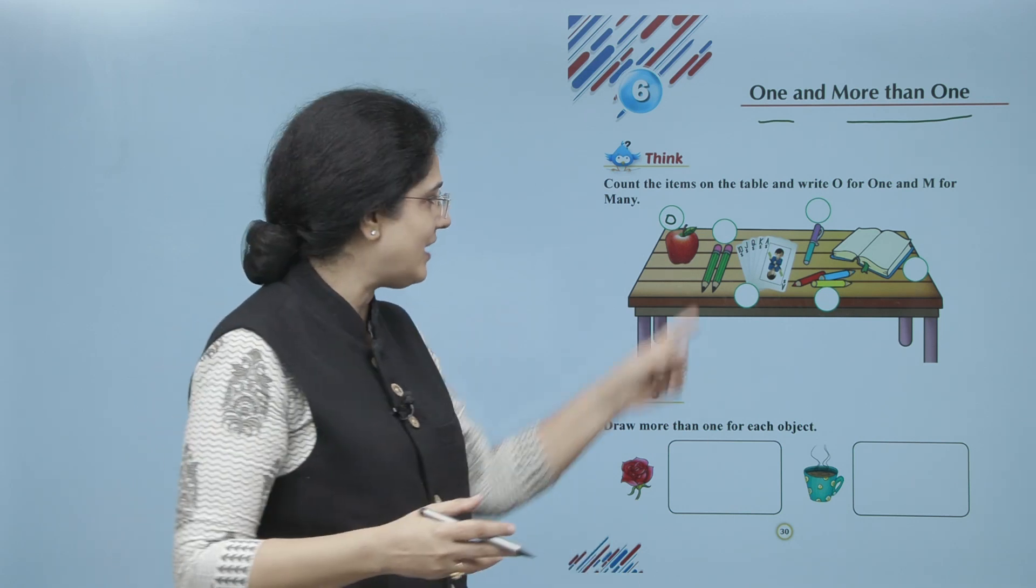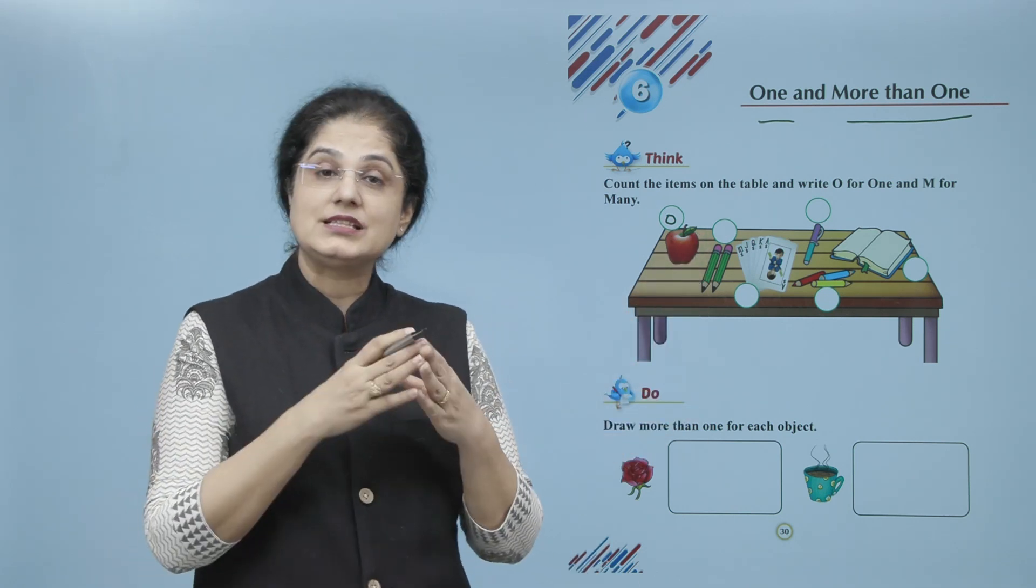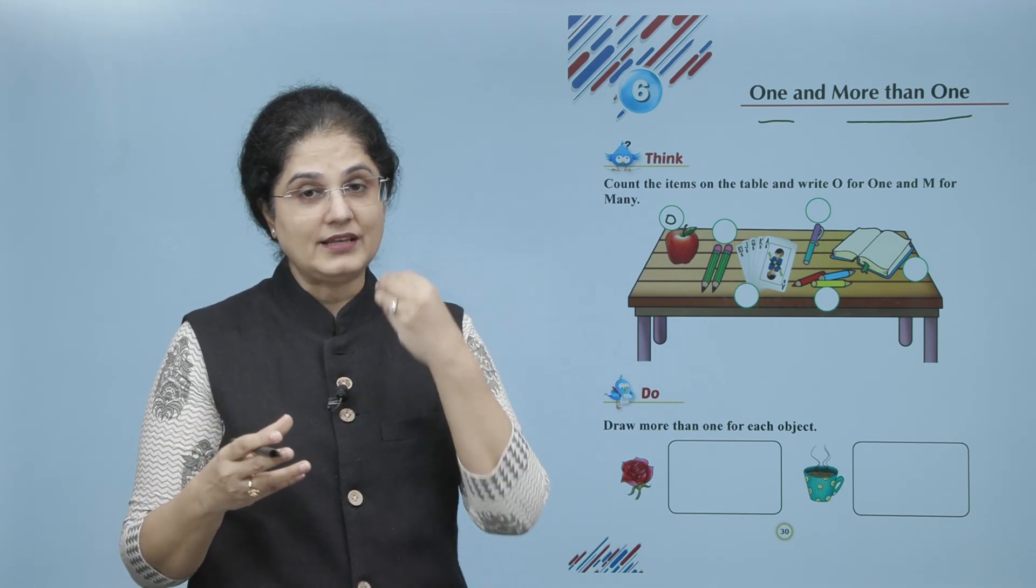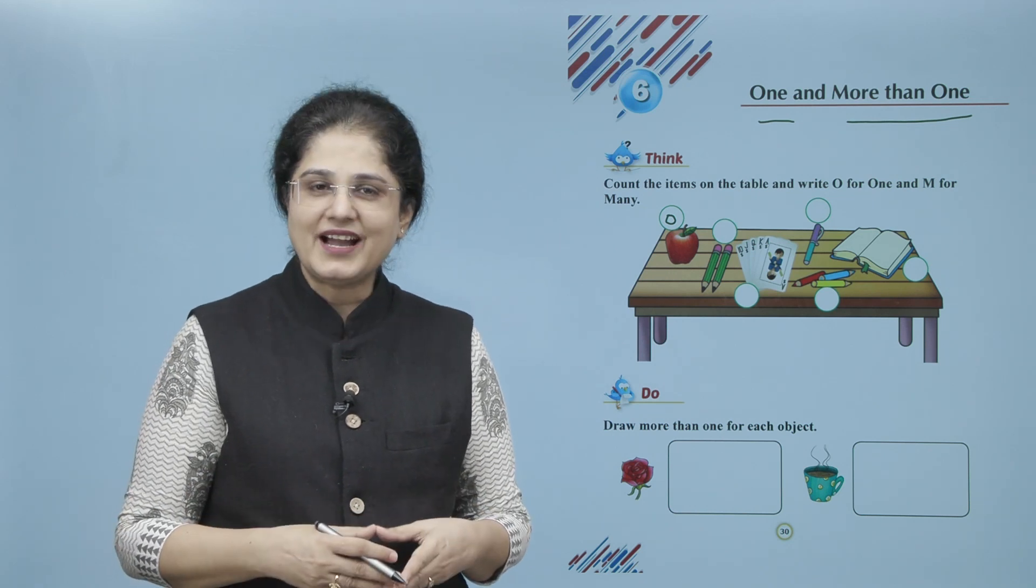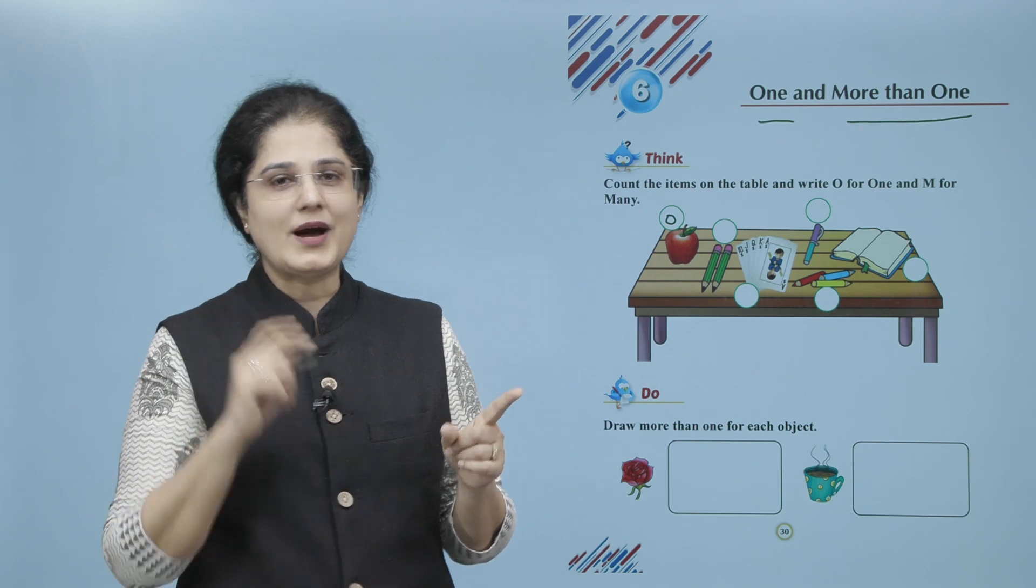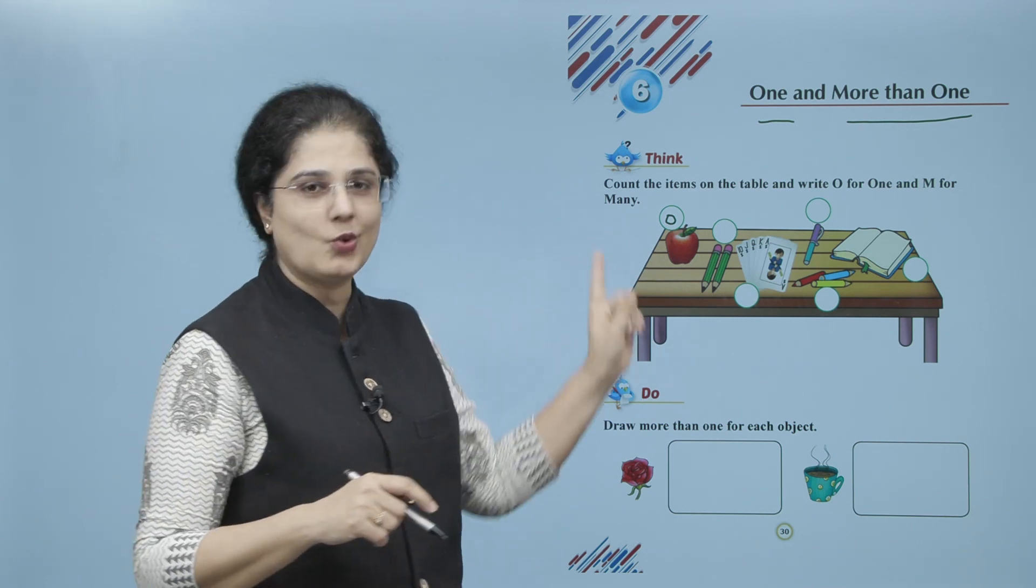Ab pencils hai, one hai ya more than one? Agar more than one hai to hamein kya likhenge yahaan pe? M. Isi tarah se cards hai, baaki kya objects dekhenge, to pen hai, color hai, book hai. To aapne identify karna hai ki one hai ya more than one hai, or accordingly ya to O ya M likhenge.